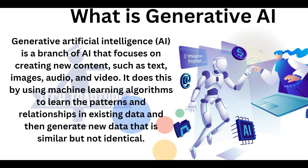Let me explain in simple terms. When I was a kid, my mother gave me an ABCD book and I was trying to learn ABCD — A for Apple, B for Ball, C for Cat, D for Dog. After a few days, my mother asked me to write my name in English and I wrote my name. I could do that because I learned ABCD, and based on that knowledge I wrote my name. That is how Gen AI works.